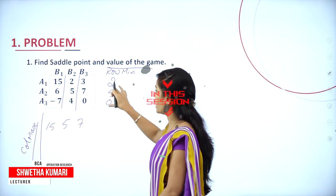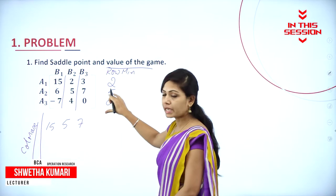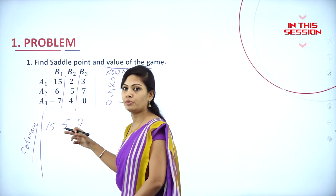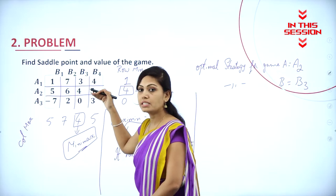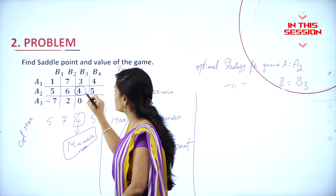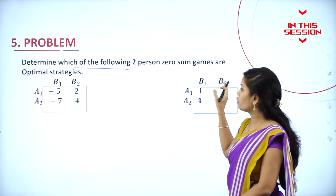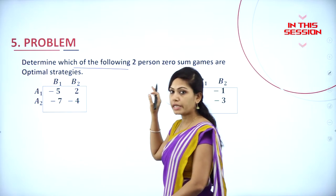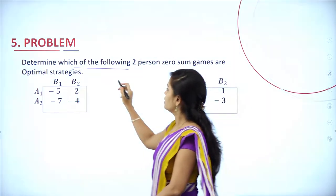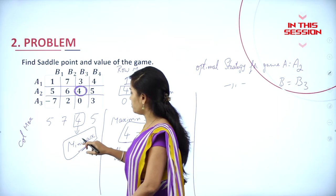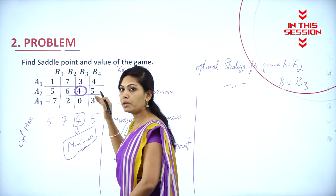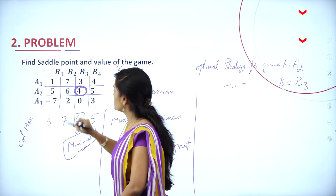Here you have to find the maximin value and here you have to find the minimax value. We have an intersected point — this is called the intersected point. This maximin value and minimax value come under one intersected common point called the intersected point.